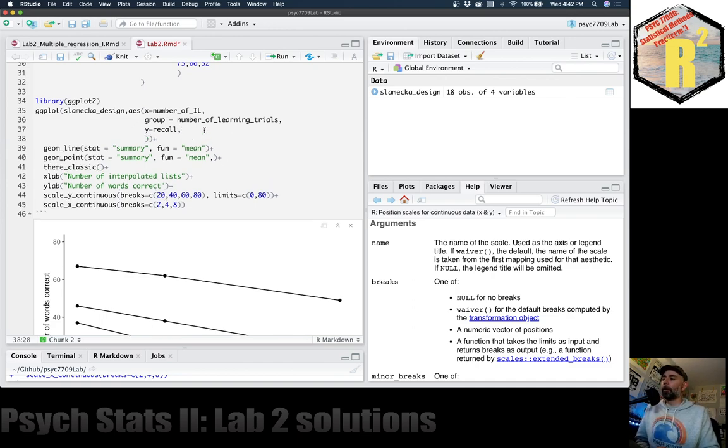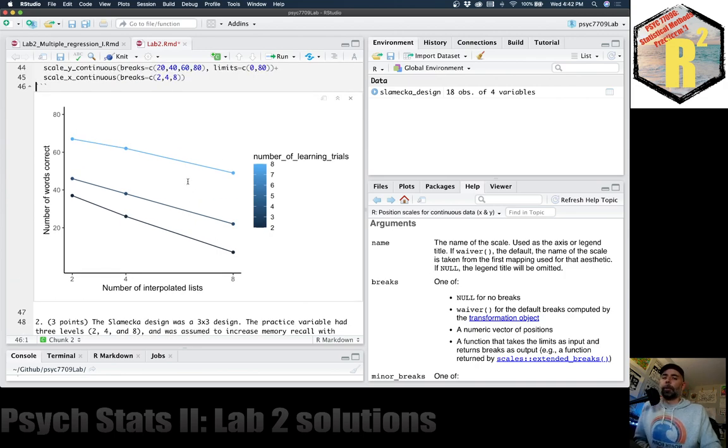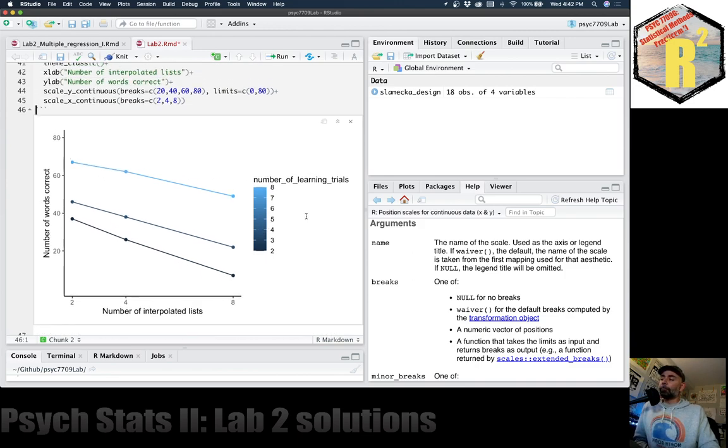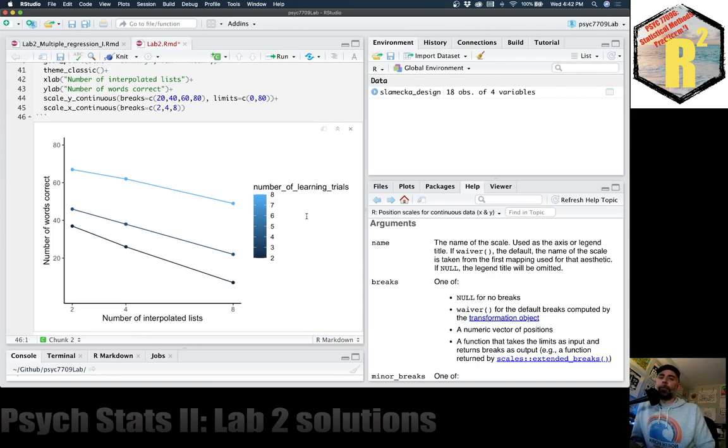Here's one thing we can do right away. So we could say, color equals number of learning trials. All right, so this works. You can see that the darker color is a 2, the middle blue color is a 4, and this lightest color is an 8. And so, in some ways, this is how ggplot2 will do this. This is how the grammar of graphics suggests you do this.